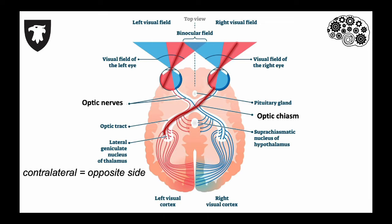The pathway from the outside part of the left eye stays on the ipsilateral, or same, side. So ultimately, the signals from the right visual world all end up in the left side of the brain.